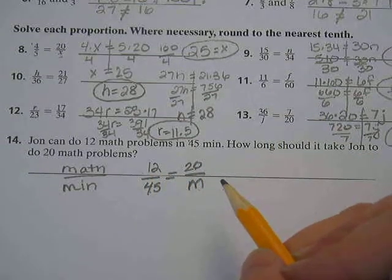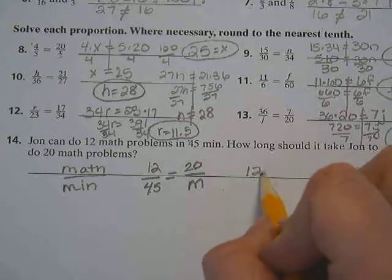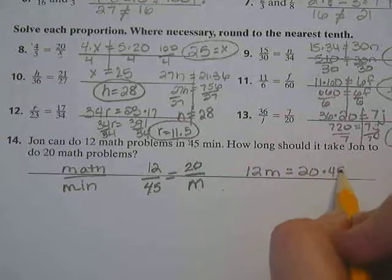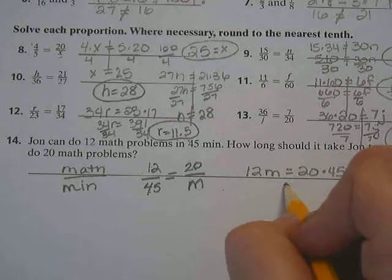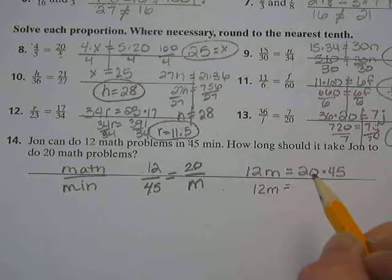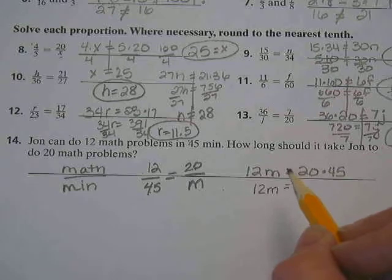Now, you can already look at this and say, is it going to take him less than 90 minutes? Yeah, because if you doubled this, you'd get 90. But 20 is less than 12 doubled, right? So let's just do it. So if we get an answer bigger than 90, we got it wrong. So let's do our cross products here.